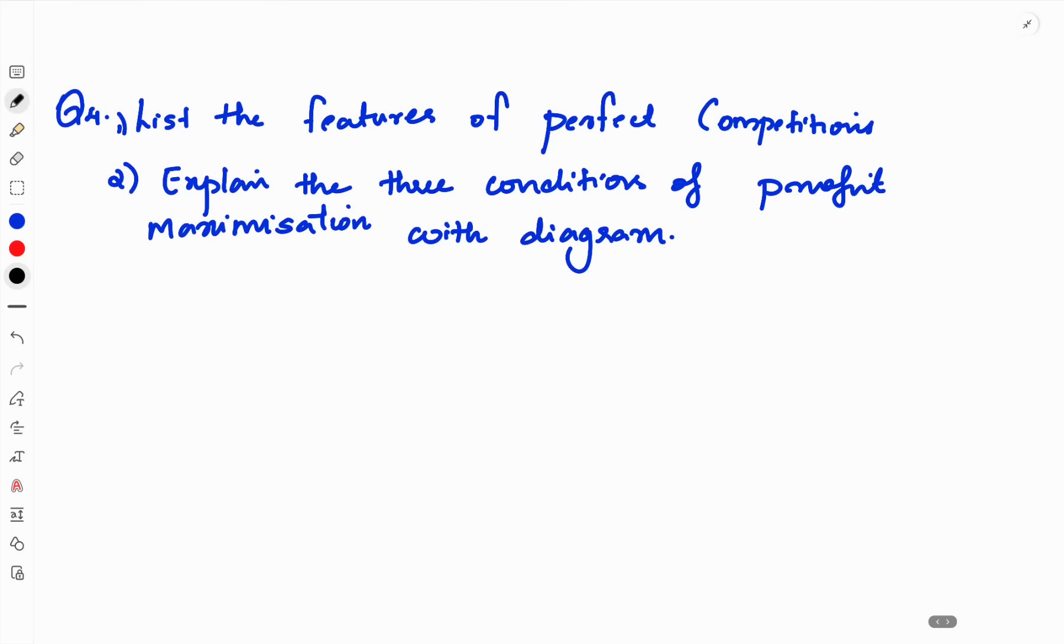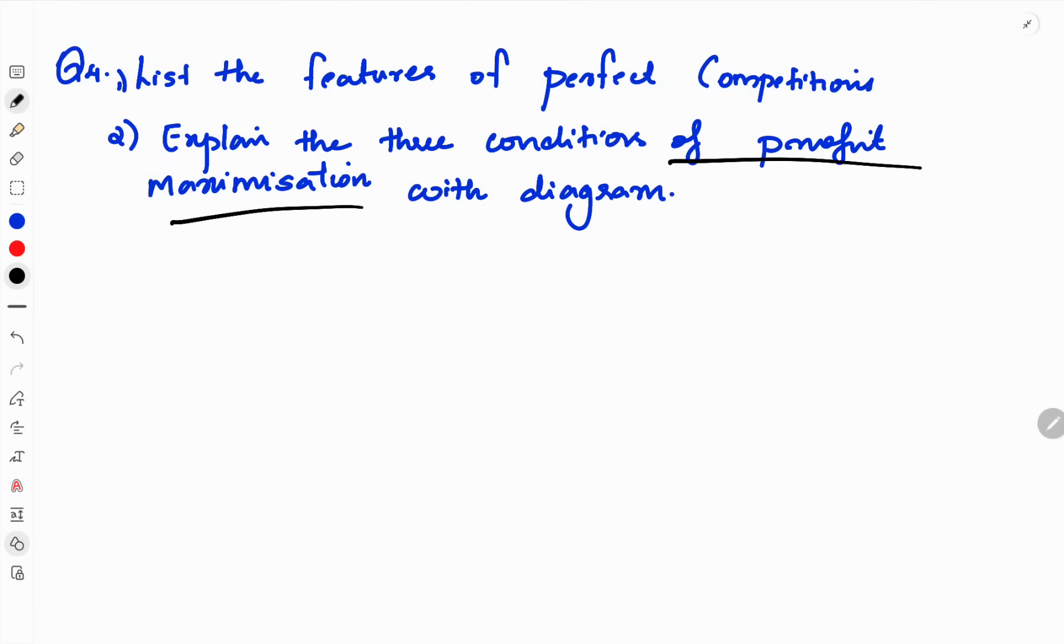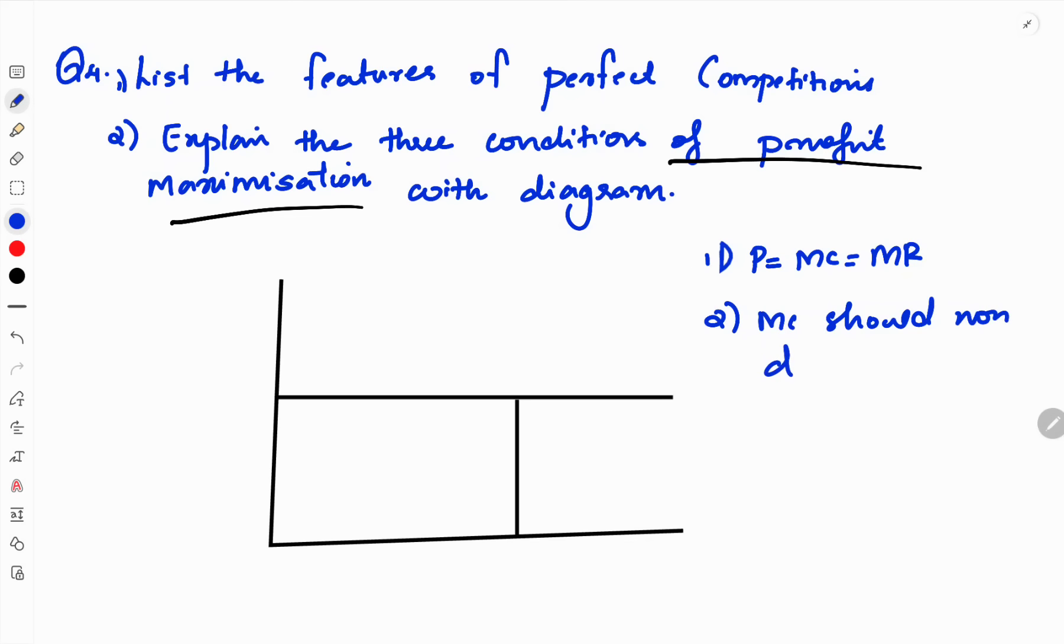Question on profit competition and profit maximization conditions. We will see the features in perfect competition. Then profit maximization conditions. The first condition is P equals MC equals MR. Second condition: MC should be non-decreasing. Third condition: price should be greater than or equal to minimum of AVC.